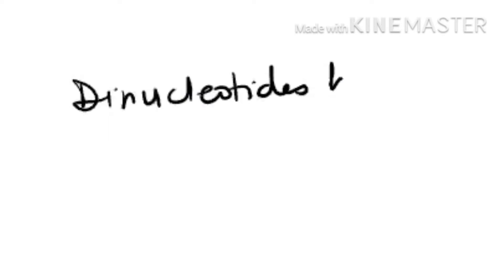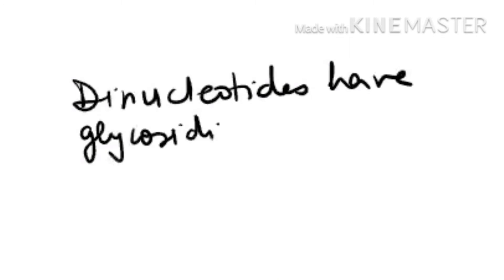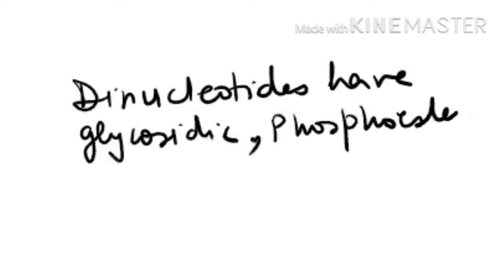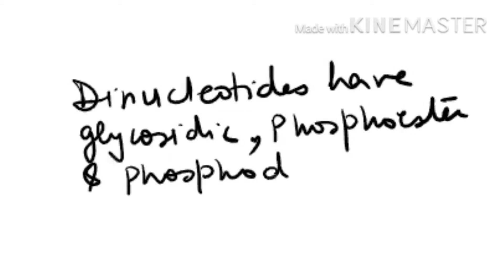Dinucleotides have a glycosidic bond, a phosphoester bond, and a phosphodiester bond. See the diagram here.